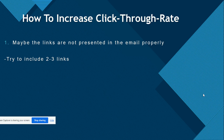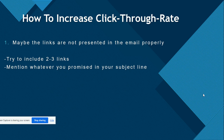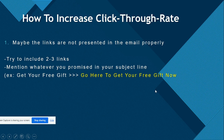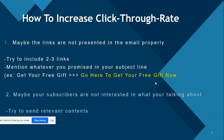Number two: mention whatever you promised in your subject line. If your subject line and your email content don't match, your subscriber will not click through. So say whatever you are saying in your subject line. For example, if your subject line is 'Get your free gift,' try to say in your email content 'Go here to get your free gift now.' This will trigger their emotions and they will immediately click through your email.